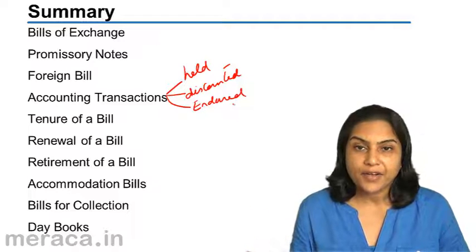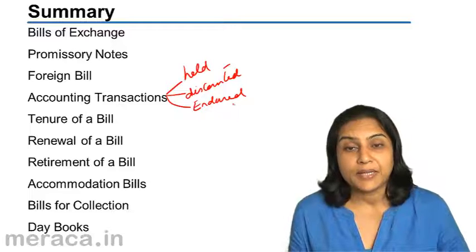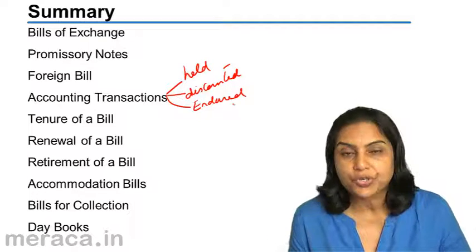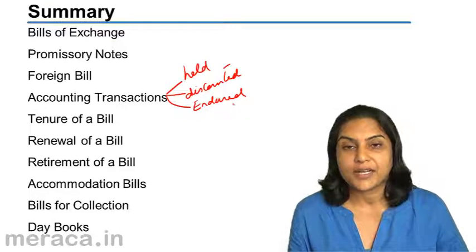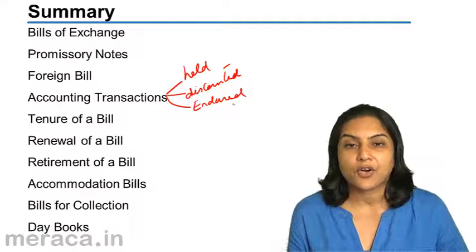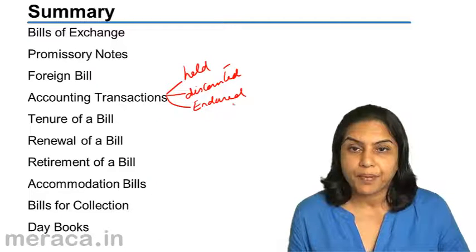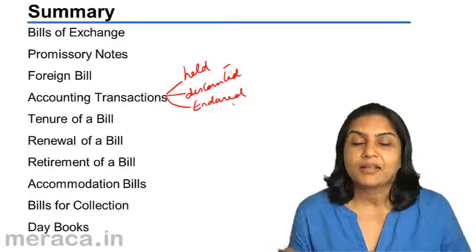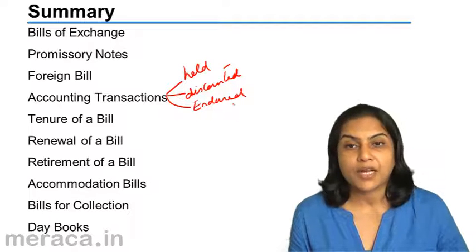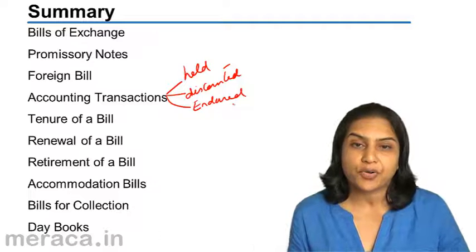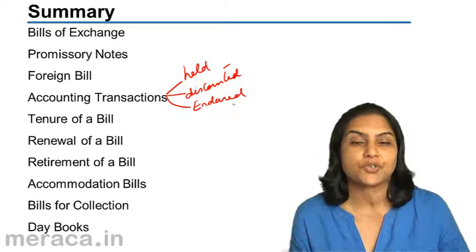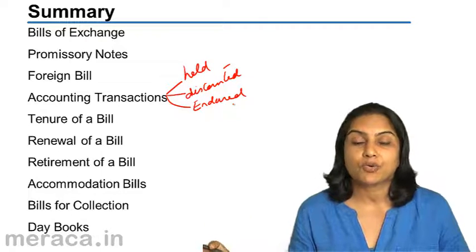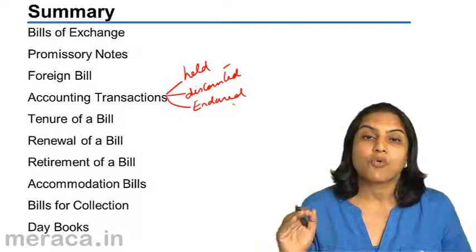We also discussed the accounting entries in the books of the debtor, where it is called bills payable. When a bill is accepted or a promissory note issued, the entry in the books of the debtor is: creditor account debit to bills payable. On maturity, the entry is: bills payable account debit to bank. If on maturity payment is not made and it is dishonored, the entry is: bills payable account debit with the amount of the bill, noting charges account debit, to creditor — with the total amount, since both the bill amount and noting charges are now payable to the creditor.